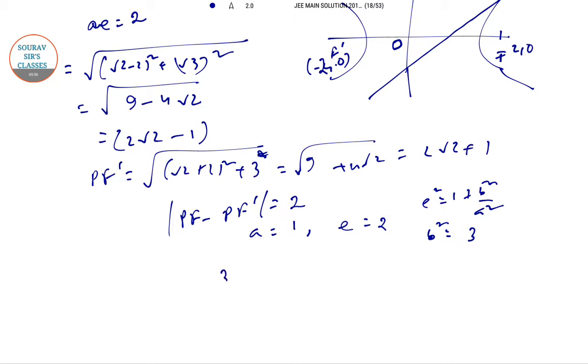The equation of the hyperbola will be x square minus y square by 3 equals 1. The equation of the tangent at root 2 comma root 3 will be root 2 x minus root 3 y equals 1, or 3 root 2 x minus root 3 y equals 3.